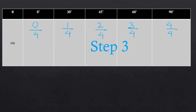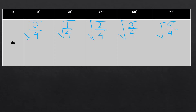Step three: take the square root of each result. Zero divided by 4 is 0, and the square root of 0 is 0. The square root of 1/4 is 1/2. The square root of 2/4, which simplifies to 1/2, gives 1/√2. The square root of 3/4 gives √3/2. And the square root of 4/4, which is 1, gives 1.